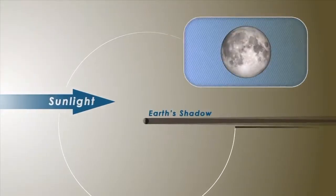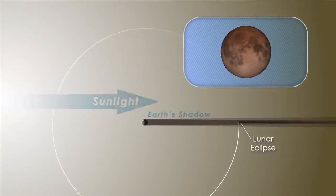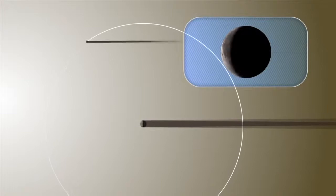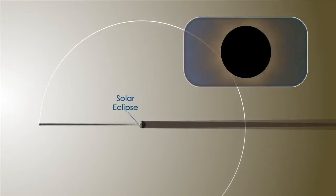A lunar eclipse occurs when the moon passes through the Earth's shadow, just as a solar eclipse occurs when part of the Earth passes through the moon's shadow.